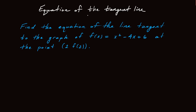In this video we're going to talk about the equation of the tangent line. Particularly, we look at this example: Find the equation of the line tangent to the graph of the function f of x equals x squared minus 4x plus 6, at the point 2, f of 2.